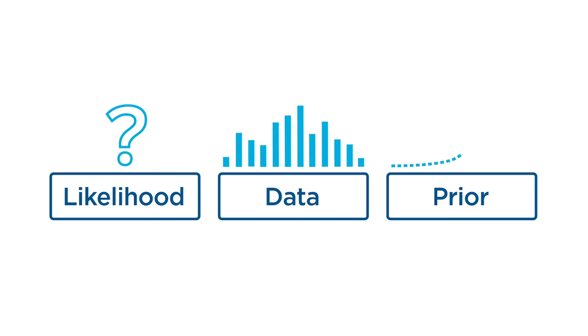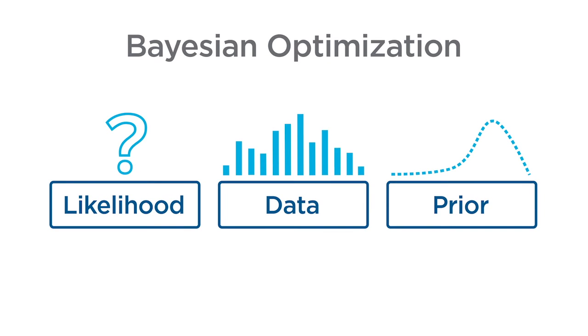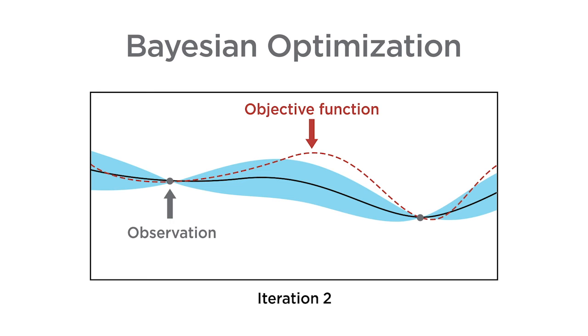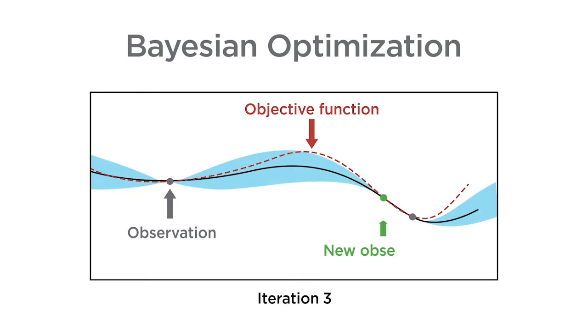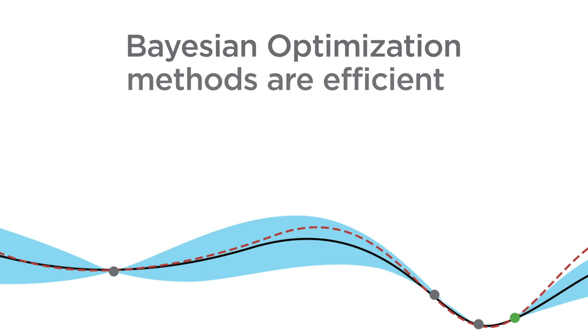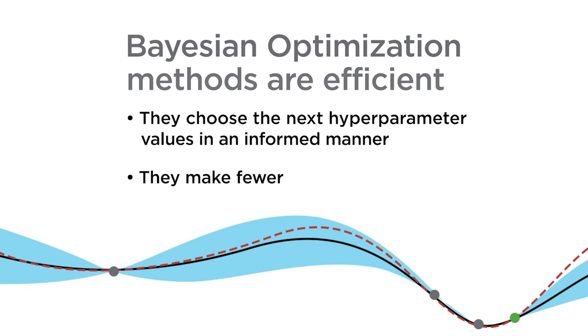Intuitively, it would be more efficient to choose the next hyperparameter combination according to the performance of past combinations. This is exactly the aim of Bayesian optimization. With this approach, the algorithm keeps track of past evaluation results, which it uses to form a probabilistic representation of the model's performance. This is done using an objective function as the main evaluator of hyperparameter combinations and an approximation of this objective function called the surrogate. Bayesian optimization methods are efficient because they choose the next hyperparameter values in an informed manner and make fewer function evaluations.